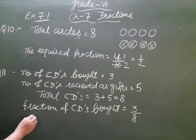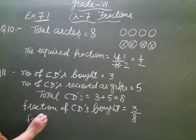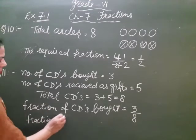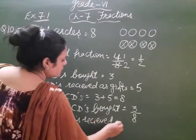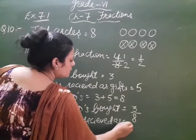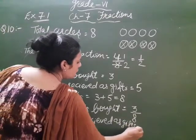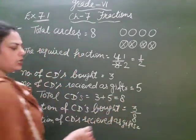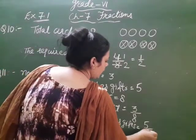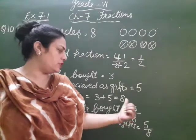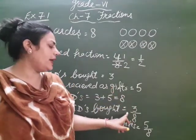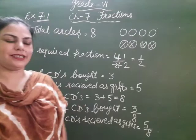Fraction of CDs received as a gift. How many CDs were received as gifts? That is 5 out of 8. So its fraction is 5 by 8. So 5 CDs were received as a gift, 3 CDs were bought. Fraction bought is 3 by 8, fraction received is 5 by 8.